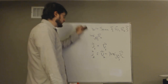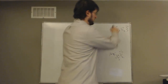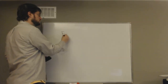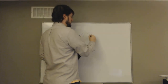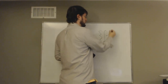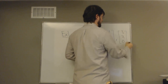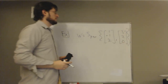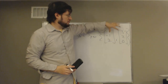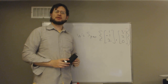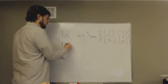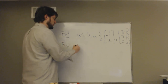Let's apply that to an example. Suppose W is the span of (1, −1, 2) and (3, 2, 0). These vectors are not perpendicular because when we dot them we get 3 − 2 + 0 = 1, which is not zero. So our goal is to find an orthogonal basis.